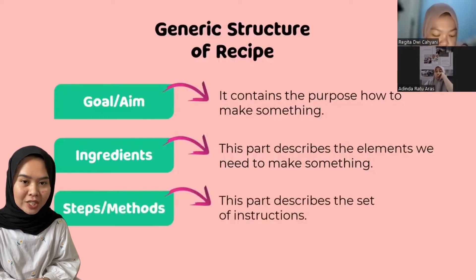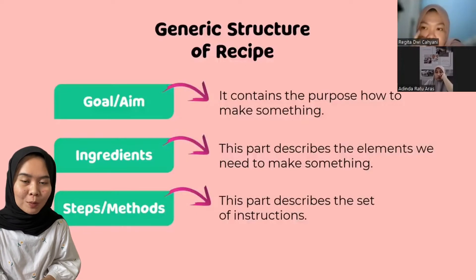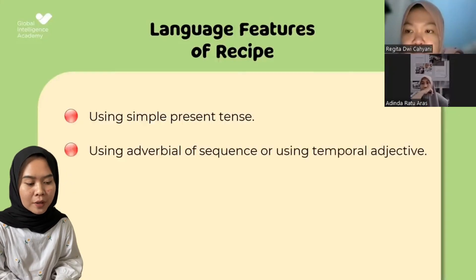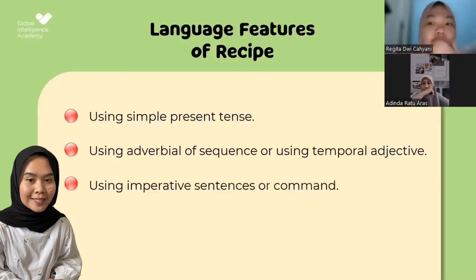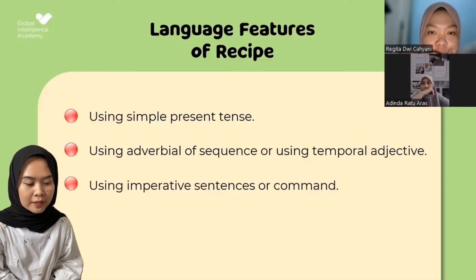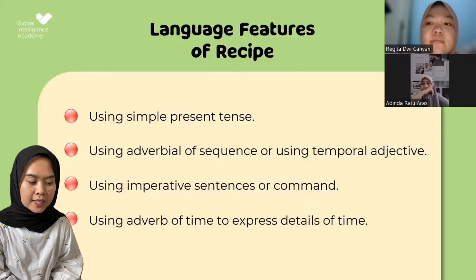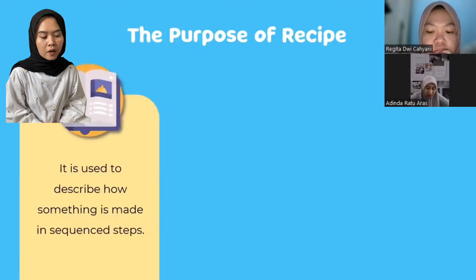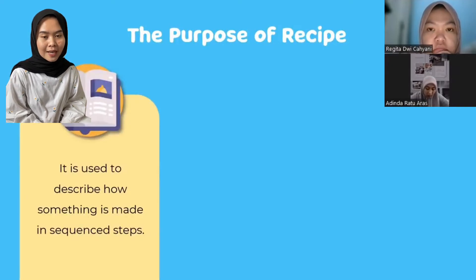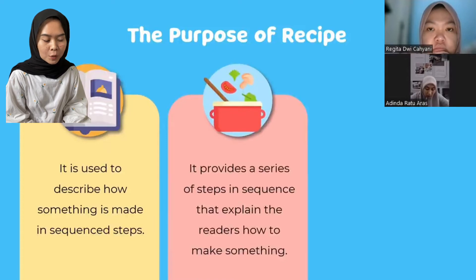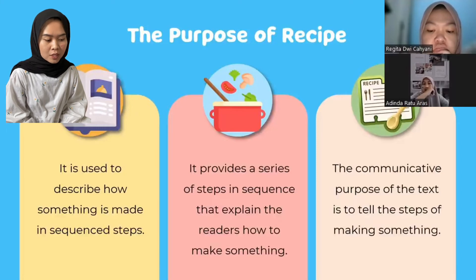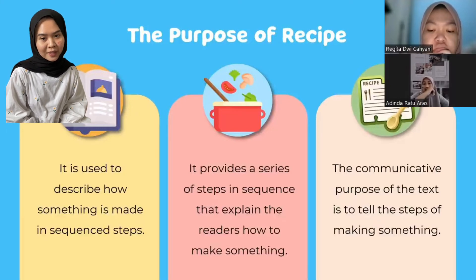And the last one, step or method — this part describes the set of instructions; it contains the steps to make something. Language features of recipe procedure text: using simple present tense, using adverbial of sequence or temporal adjective, using imperative sentences or commands, and using adverbs of time to express details of time. The purpose of recipe procedure text is to describe how something is made in sequential steps, to provide a series of steps that explain to readers how to make something, and the communicative purpose is to tell the steps of making something.